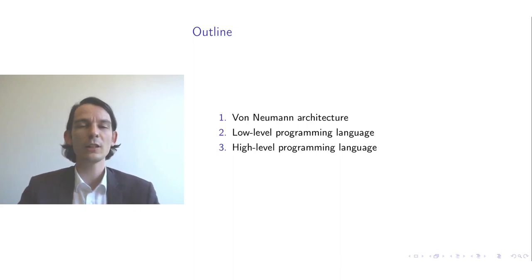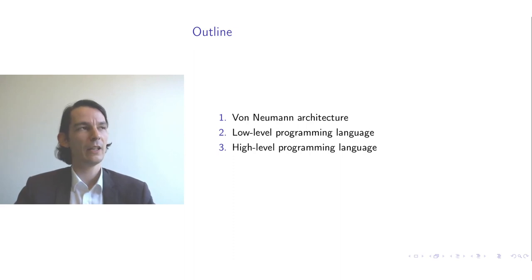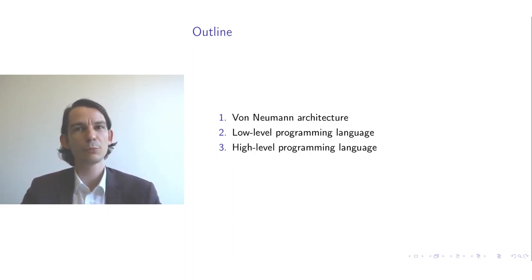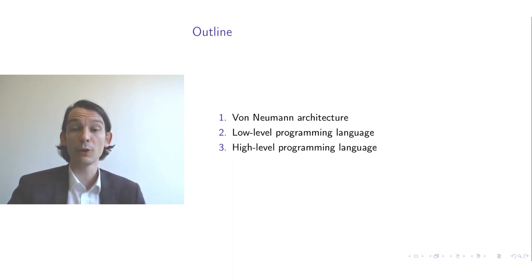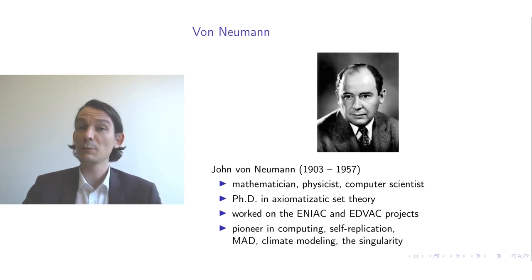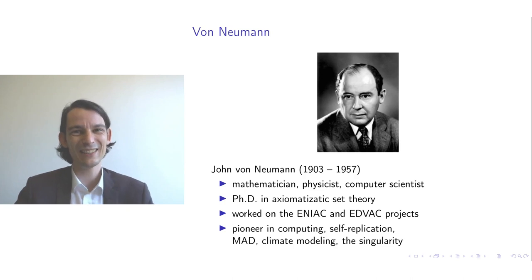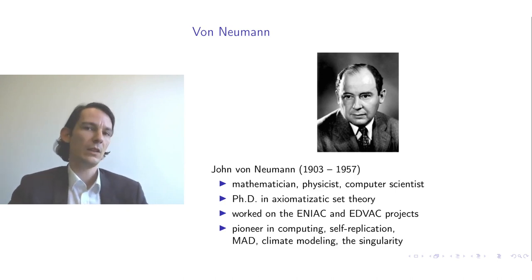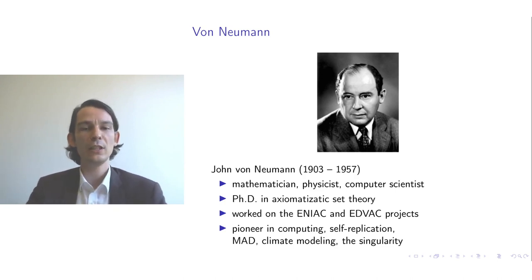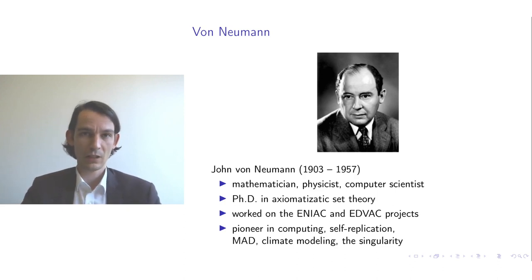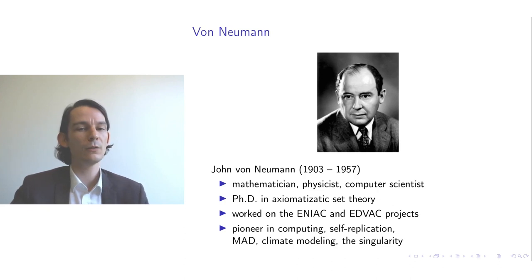The von Neumann architecture is an important way of looking at how computers are programmed, and it was invented by von Neumann. Von Neumann was a mathematician, physicist, and computer scientist, among other things. He did his PhD in axiomatic set theory. During the Second World War, he worked on the ENIAC and EDVAC projects.